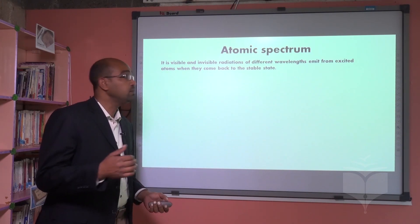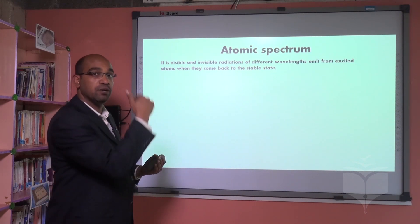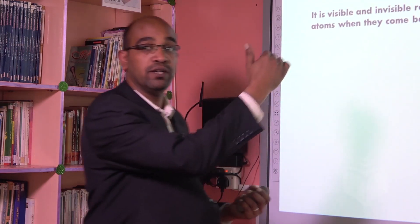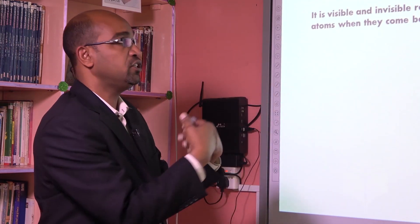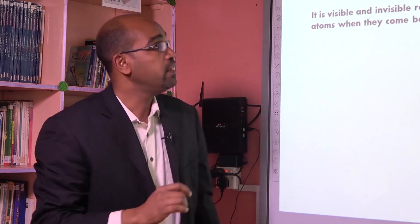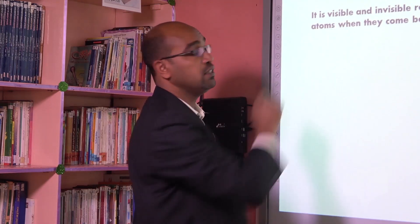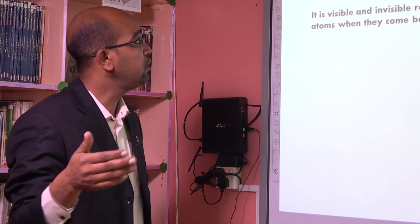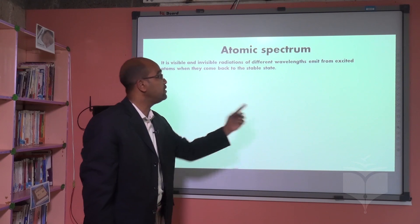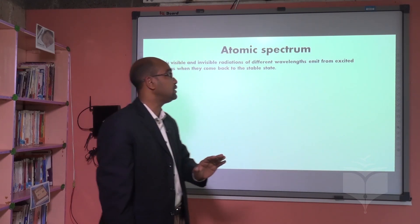As explained, when excitation occurs, electrons jump from lower to higher levels, then return and give out energy as atomic spectrum. The atomic spectrum consists of two parts — visible and invisible — with different wavelengths and different frequencies.